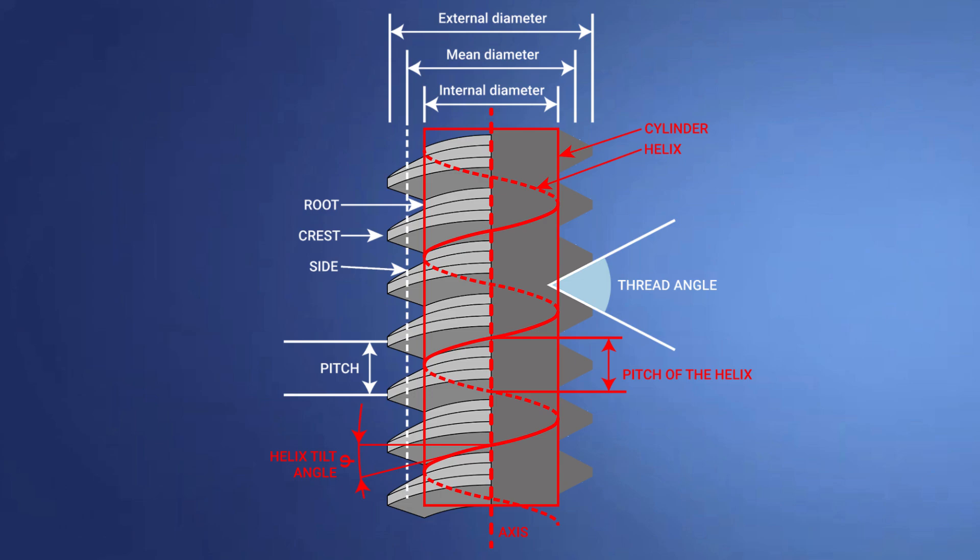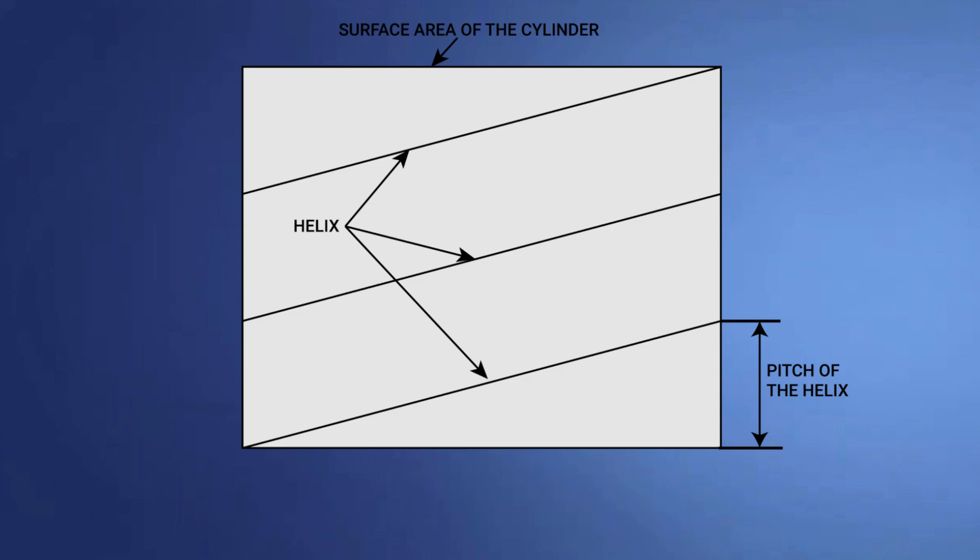In this section, we can clearly see the angle of the helix that determines the number of teeth of the screw, which are called cogs.